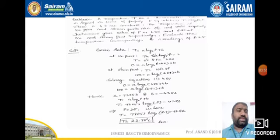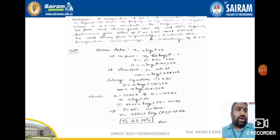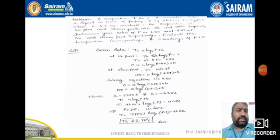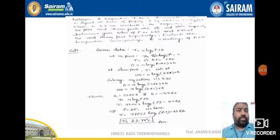Now substitute the a and b values into the equation. The relation becomes: t = 77.85·ln(p) − 47.82. At P = 2.5, substitute to calculate the temperature: t = 77.053·ln(2.5) − 47.82. We get T = 22.78°C.